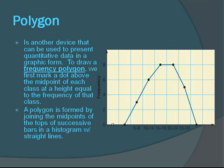A polygon is another device that can be used to present quantitative data in a graphic form. To draw a frequency polygon we first mark a dot above the midpoint of each class at a height equal to the frequency of that class. A polygon is formed by joining the midpoints of the tops of successive bars in a histogram with straight lines.